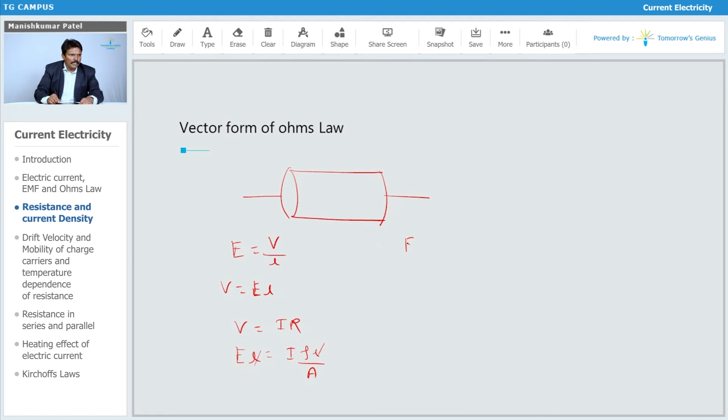The L terms get cancelled. So E is equals to I rho upon A. This is how I can write it down for this particular case, and we have to write it down further.